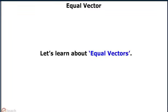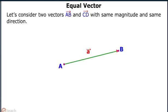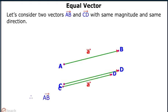Let us learn about equal vectors. Consider two vectors AB and CD with the same magnitude and direction, where mod of AB equals mod of CD equals a. Two vectors A and B are said to be equal if they have the same magnitude and direction regardless of the position of their initial points. They can be written as vector A equals vector B.